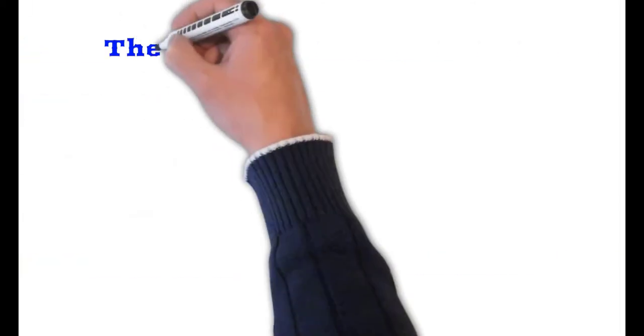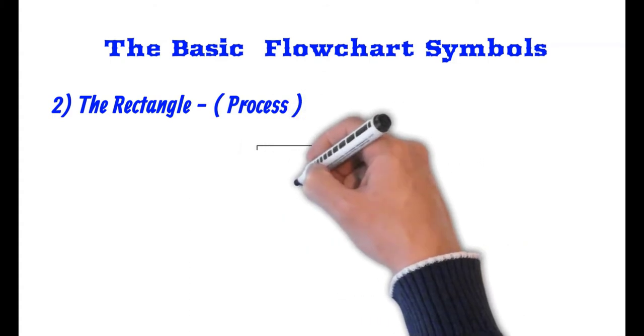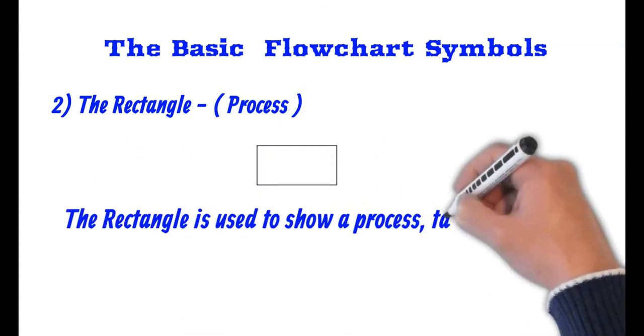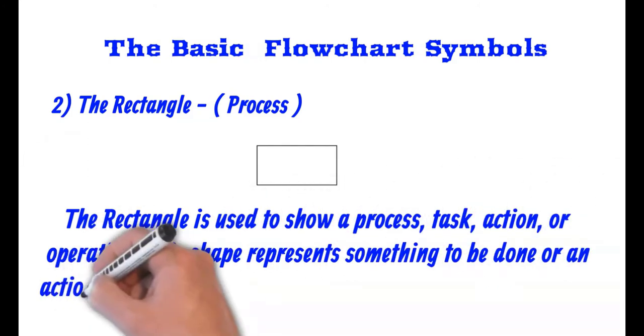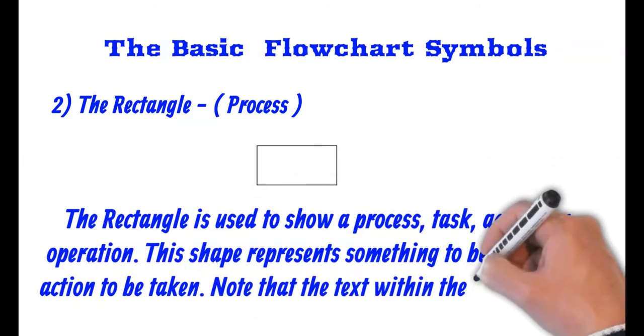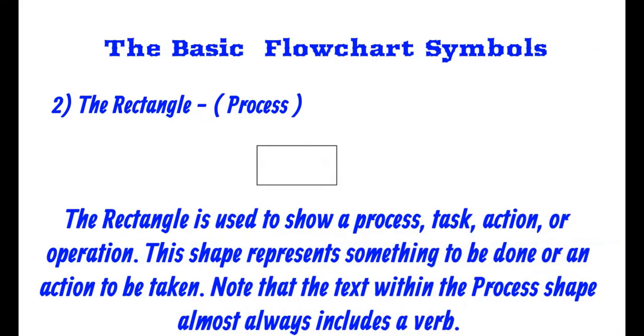The next symbol we're going to discuss is the rectangle. The rectangle is also known as a process. The rectangle is used to show a process, task, action, or operation. This shape represents something to be done or an action to be taken. Note that text within process shapes almost always include a verb.